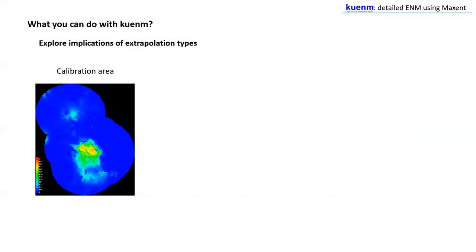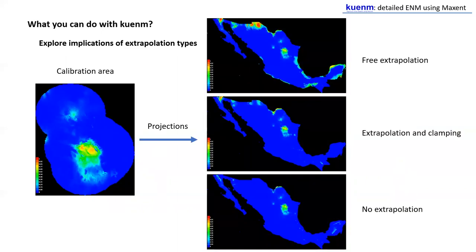Now you have good final models — models that were good during calibration and also passed testing with independent data. You can produce those models with replicates and with the same type of outputs, doing jackknife to see variable contribution. You can also project the models to geographic areas that are not the calibration area. When you do that, you have options for extrapolation of suitability values: free extrapolation, extrapolation with clamping, and no extrapolation at all. KUNHM allows you to produce all of them at once and explore the effects of each extrapolation decision.